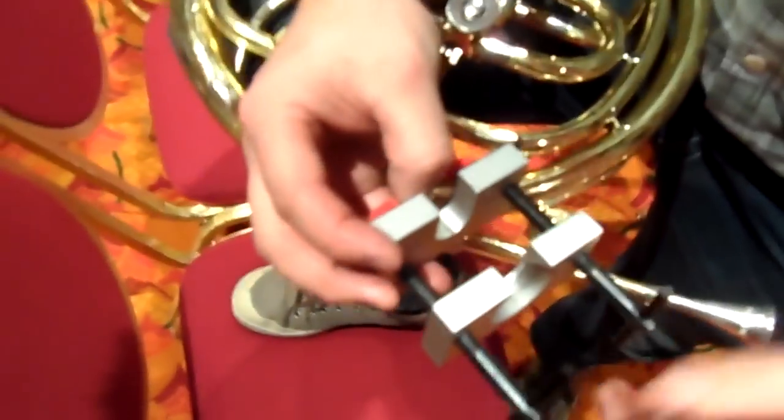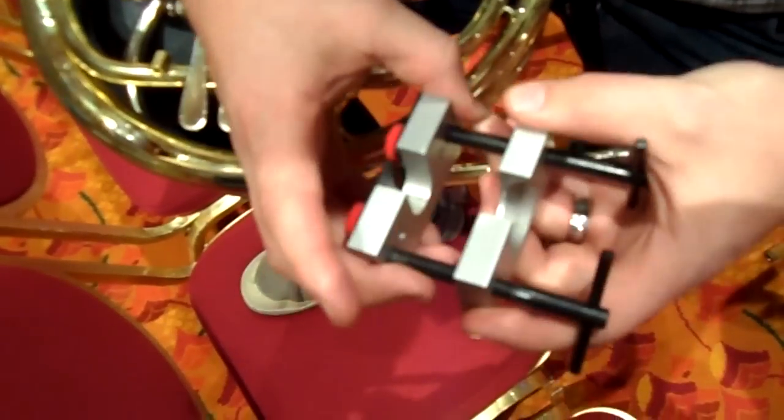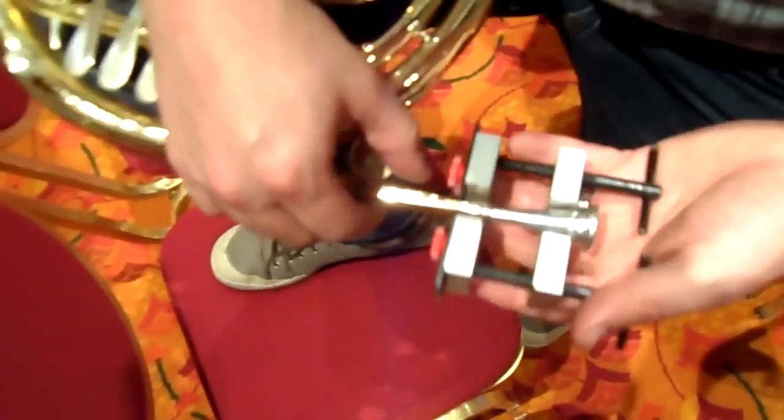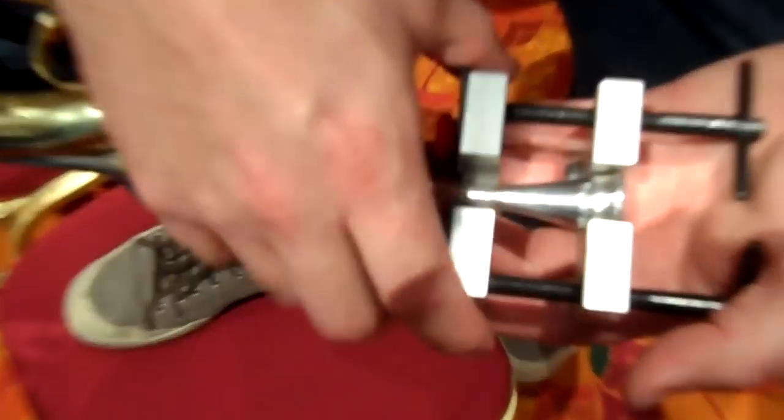It's a puller that works with the threads on these two rods here. It's going to separate these two blocks when we put it on the horn.